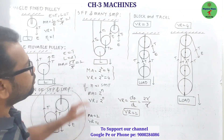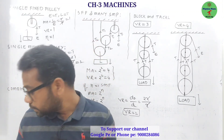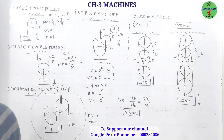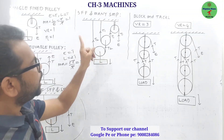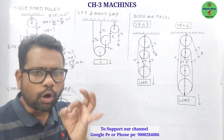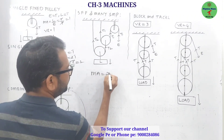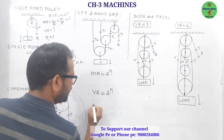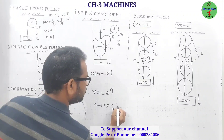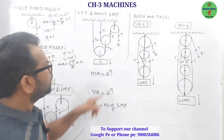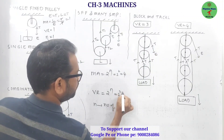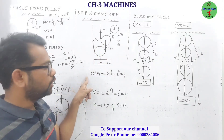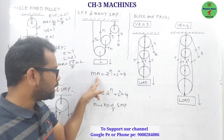Now, for a combination of one single fixed pulley with many single movable pulleys, the mechanical advantage equals 2 to the power n, and velocity ratio also equals 2 to the power n, where n is the number of single movable pulleys. For example, if there are 2 movable pulleys, MA and VR are both 2² = 4. If there are 3 movable pulleys, MA and VR are both 2³ = 8. This holds in the ideal case where mechanical advantage equals velocity ratio.